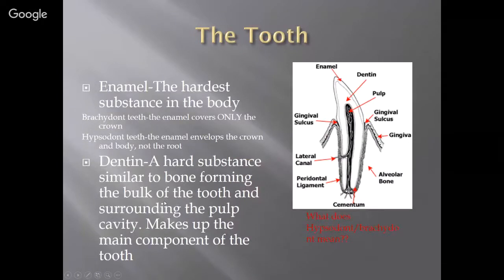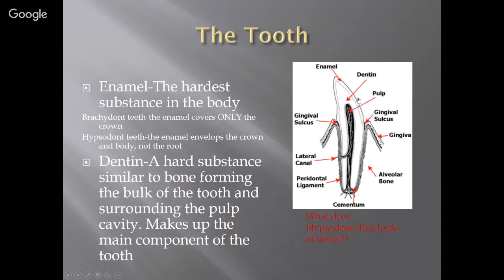So the tooth: we talked about enamel and how it's made by ameloblasts — the hardest substance in the body. With brachydont teeth, the enamel covers only the crown. In hypsodont teeth — the teeth of animals like hamsters, rabbits, cows, and horses — the enamel envelops the crown and body but not the root. They do have enamel, but it covers more than in brachydont teeth. It has to be very sharp and very tough because they're constantly grinding it down. Dentin is the hard substance similar to bone, made by odontoblasts. It forms the bulk of the tooth and surrounds the pulp cavity. Brachydont means short tooth — once you lose your baby tooth you get your adult tooth, and that's your last chance. With hypsodont teeth, animals have baby teeth and then adult teeth that constantly erupt for the life of the pet. If the pet lives long enough, they will eventually lose those teeth because eruption stops when the available tooth material runs out.